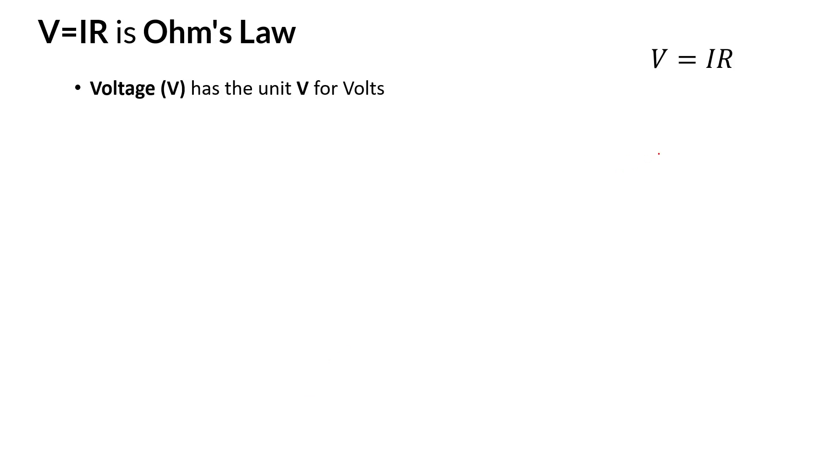V equals IR is Ohm's Law. V stands for voltage and its unit is volts. Current, the variable is I, and the unit is amperes. Resistance is R, and it has this horseshoe-like symbol called ohms as the unit. So if your answer was 20 ohms, you could say 20 horseshoes, which is really ohms.